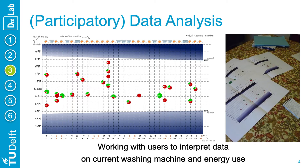Each pie chart on this map represents a washing machine load, with a green slice coming from the solar panels and a red slice coming from the electricity grid. In this so-called participatory data analysis, we confronted participants with their own data and asked them to help us understand how their laundry routines came to look like that on the paper.